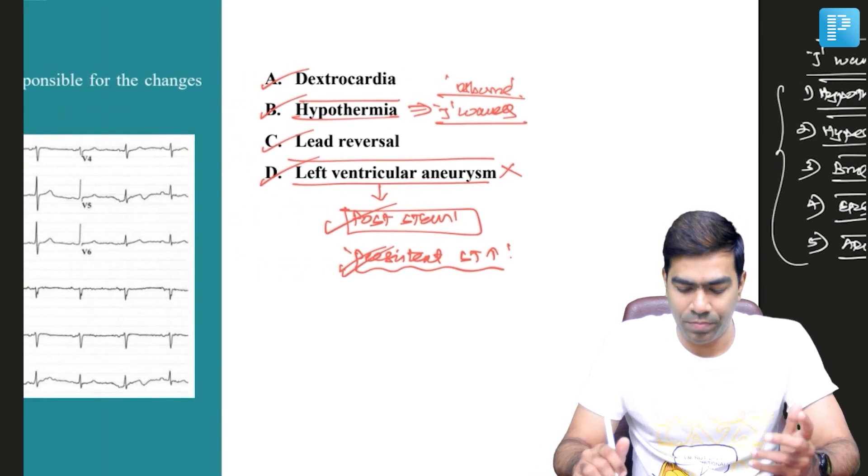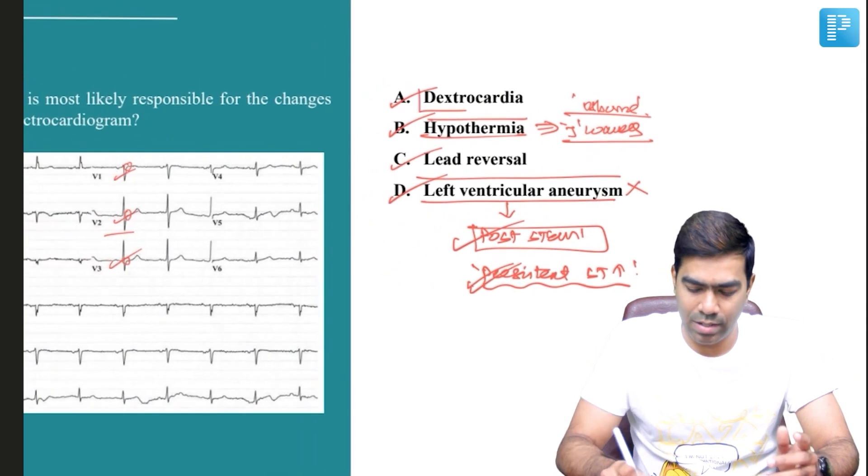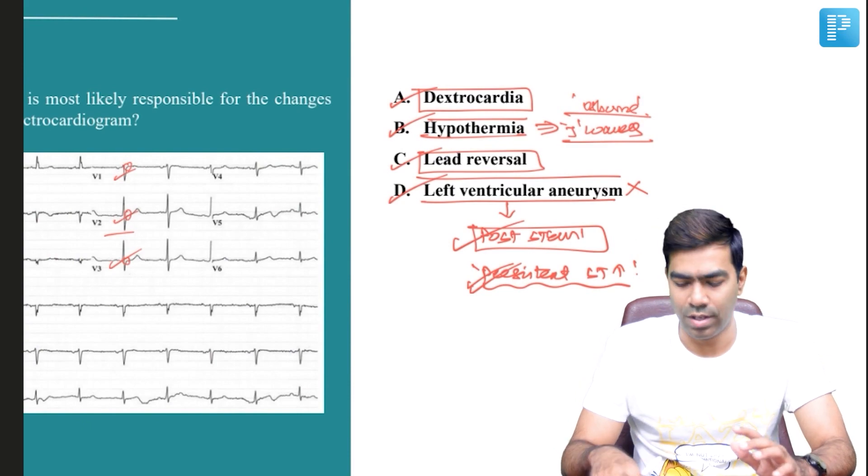Dextrocardia and lead reversal are very close differential diagnoses as far as EKG is concerned, even though there are many other differences in clinical findings and echocardiogram. The number one finding in dextrocardia is poor R wave progression — very important. Because the heart is on the right side, V1 may show some R waves, but as you move away from the right-sided heart, you will see diminishing R waves, giving poor R wave progression. This is the quintessential finding in dextrocardia.